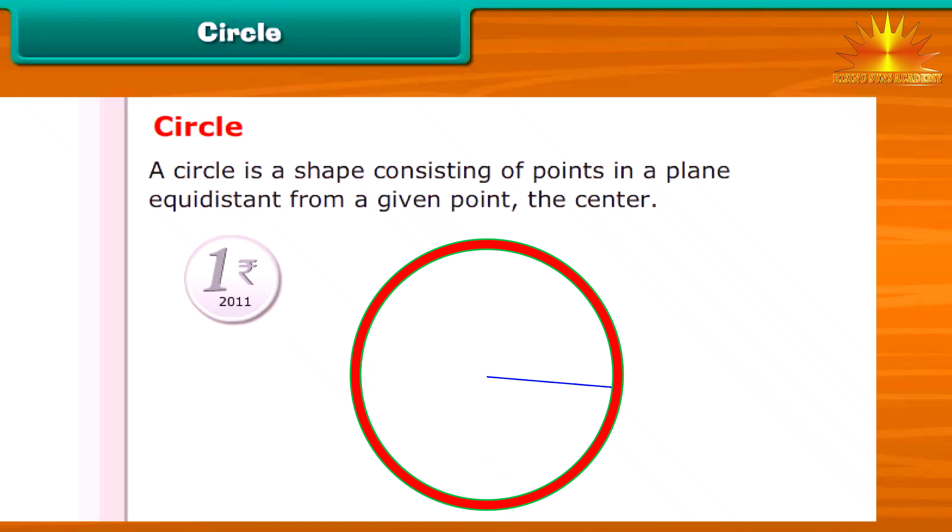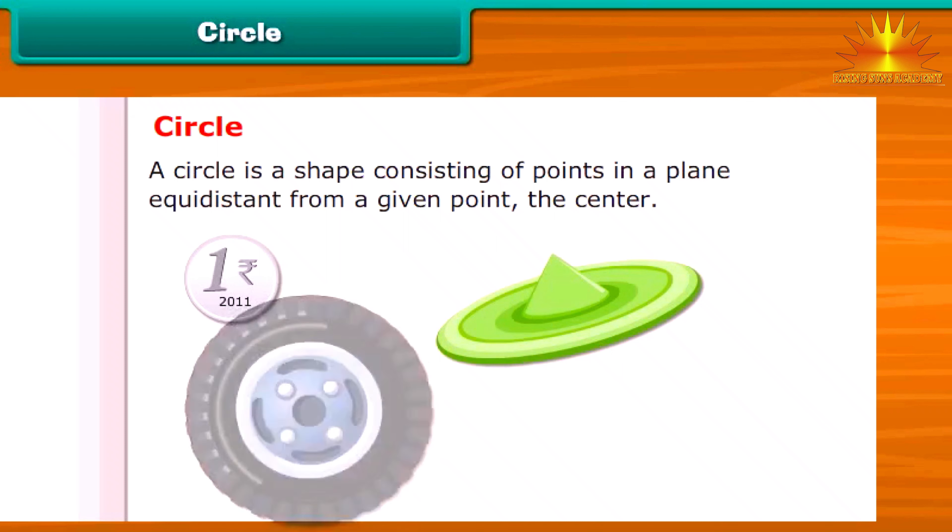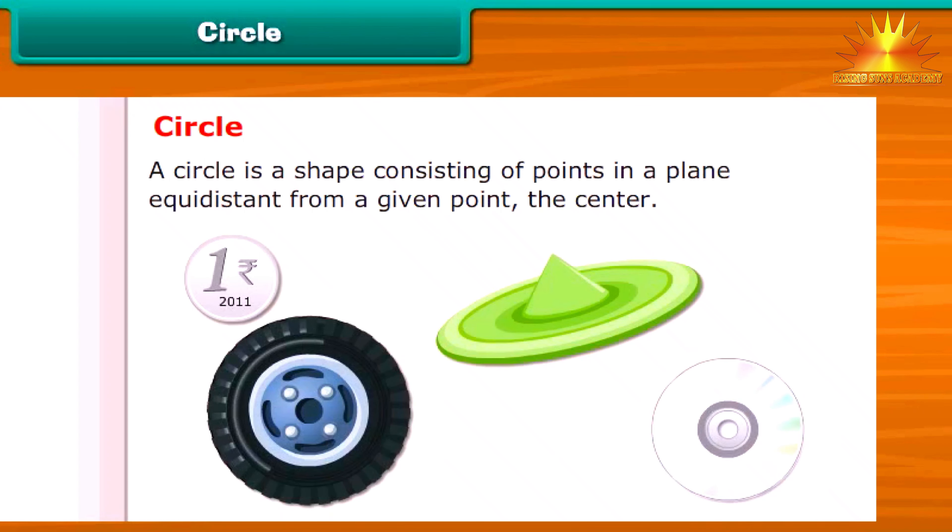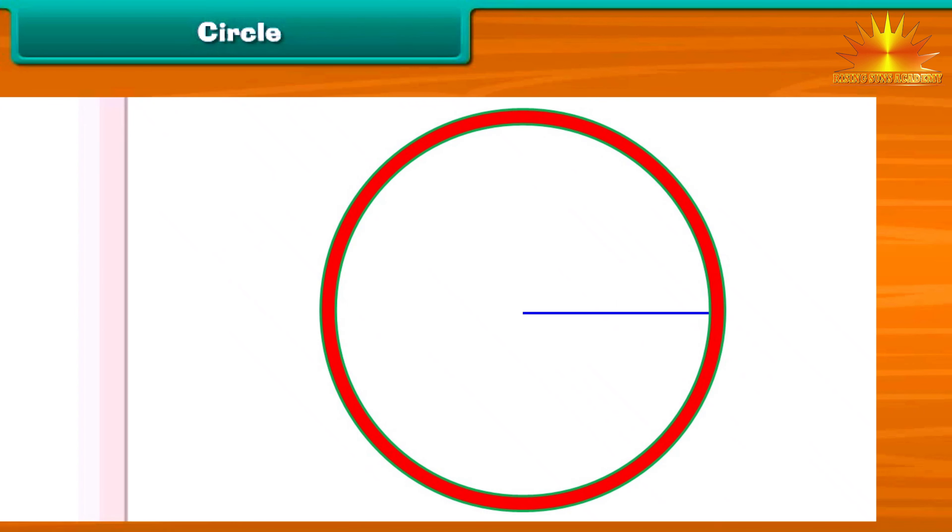One rupee coins, flying disk, wheel, CD are circular in shape. The length of the line segment from center of the circle to any point on the circle is called the radius. Twice the radius of the circle is called the diameter of the circle. A circle of a given radius can be drawn with the help of a compass.